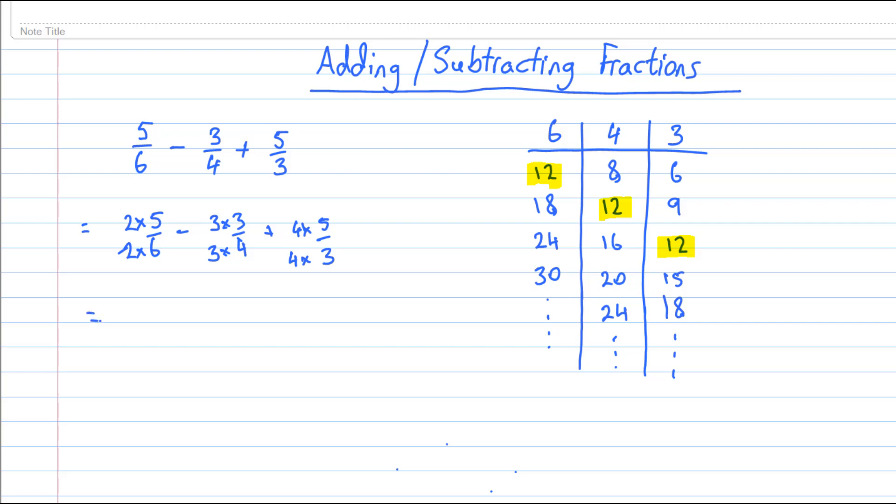So just multiplying out: 2 times 5 is 10, 3 times 3 is 9, 4 times 5 is 20, and each of our denominators as we designed it is going to be 12. So now all we have to do is add up those numbers that are on the numerators.